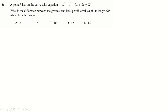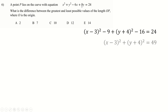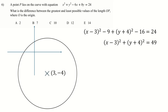Question 6: complete the square on x's and y's separately to get the standard form, which simplifies to centre (3, −4) and radius 7. The distance from the origin to the centre is √(3² + 4²) = 5. So the least distance from the origin to the circle is 5 − 7 = ... wait, radius 7 and distance 5 means the circle encloses the origin. The minimum distance is 7 − 5 = 2 and the maximum is 7 + 5 = 12, giving a difference of 10.